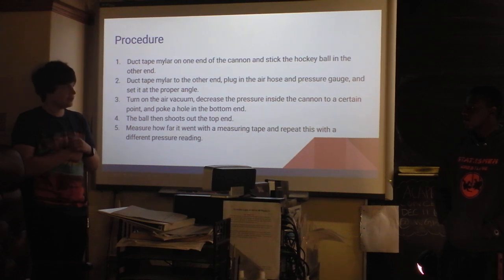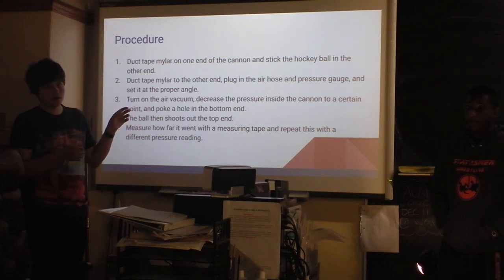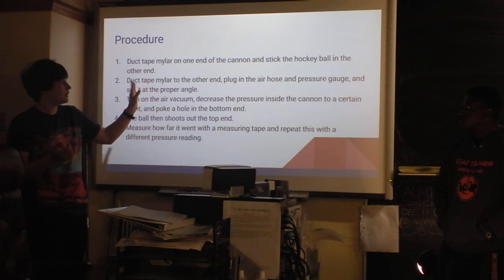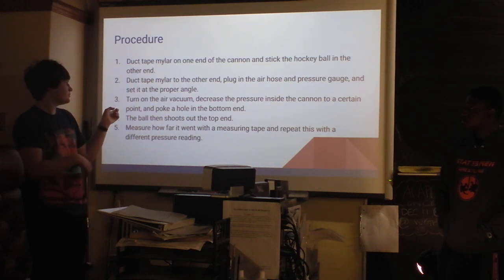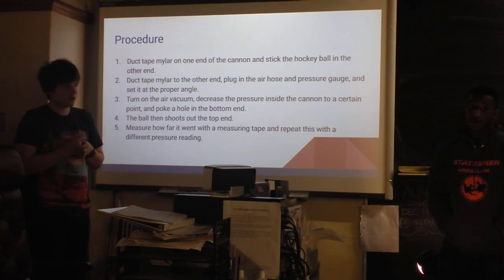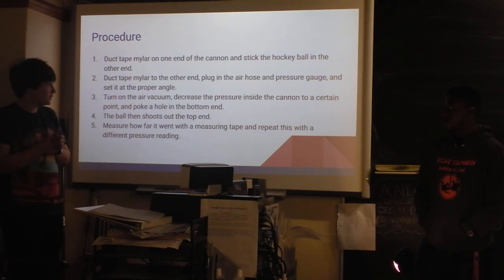The procedure was to duct tape the back mylar, which was the emergency blanket made out of mylar, which is what the guy used in the presentation from SLU. Our seal wasn't the best because we used duct tape instead of the caps that he used. After we duct taped the back end, we stuck the hockey ball in the top and it rolled down to the screw. Then we created a seal on the other end and set it at the proper angle. We calculated the angle before using trigonometry and put it at 60 degrees, or 1.06 meters off the ground. Then we turned on the vacuum pump and decreased the pressure inside the can to a certain void.